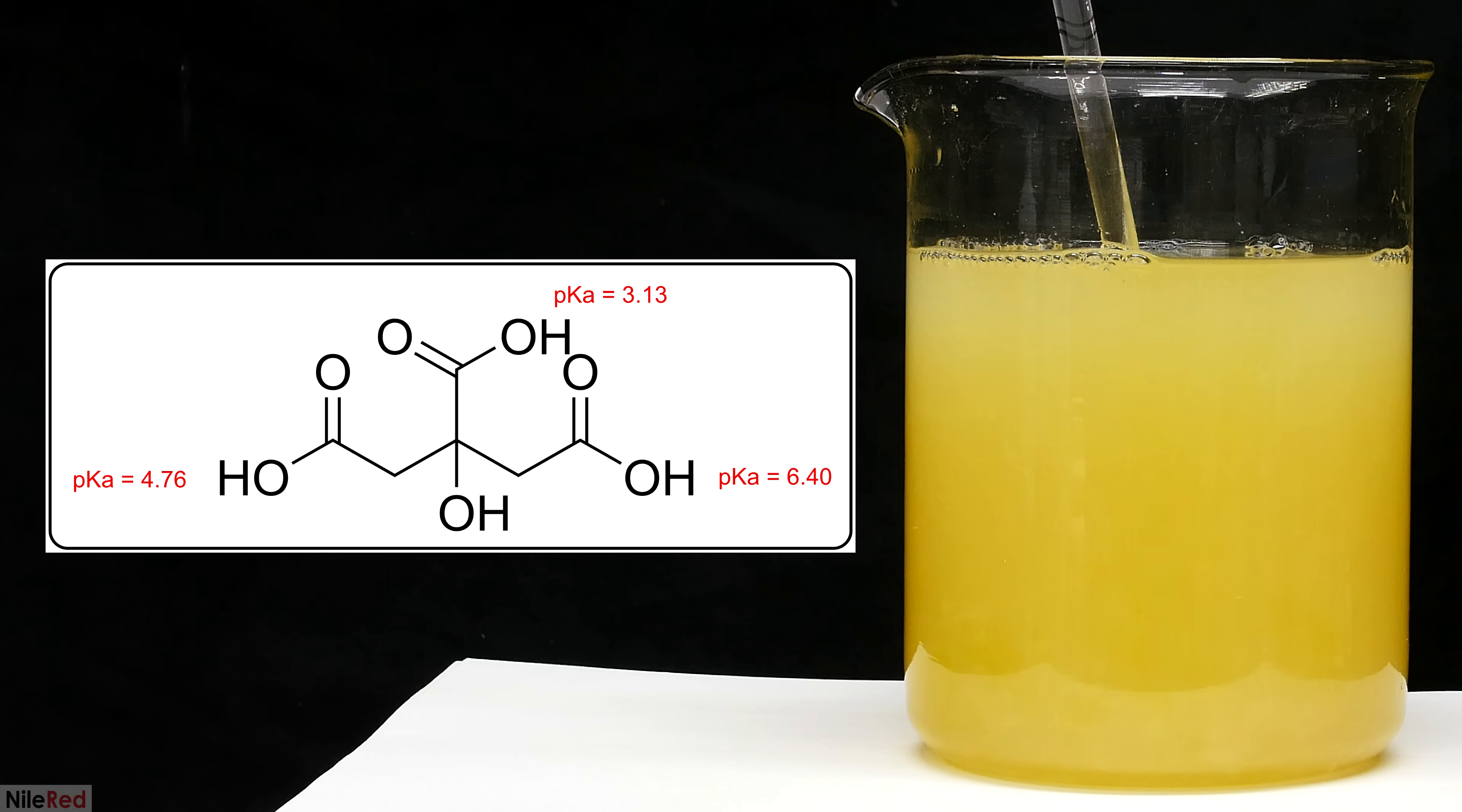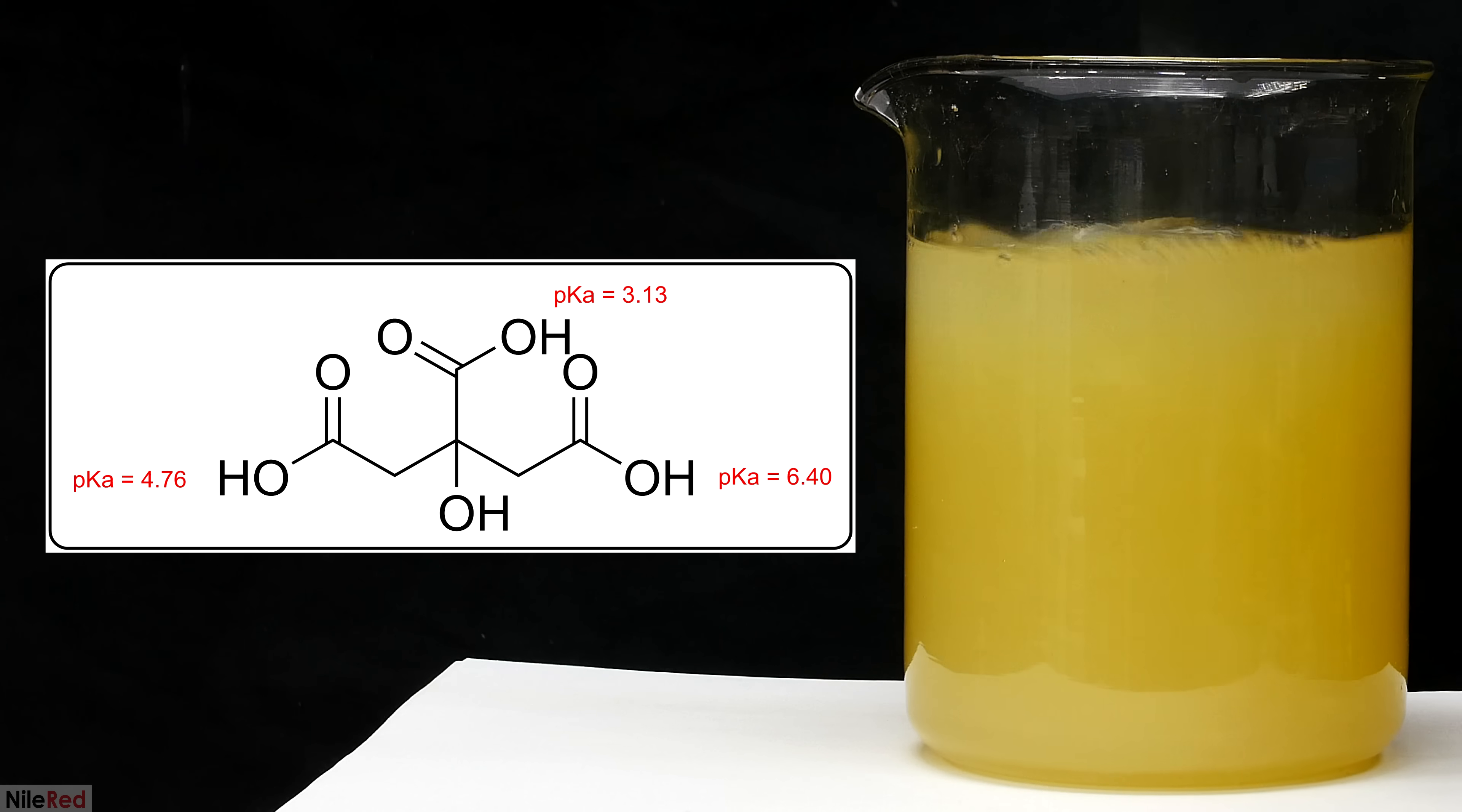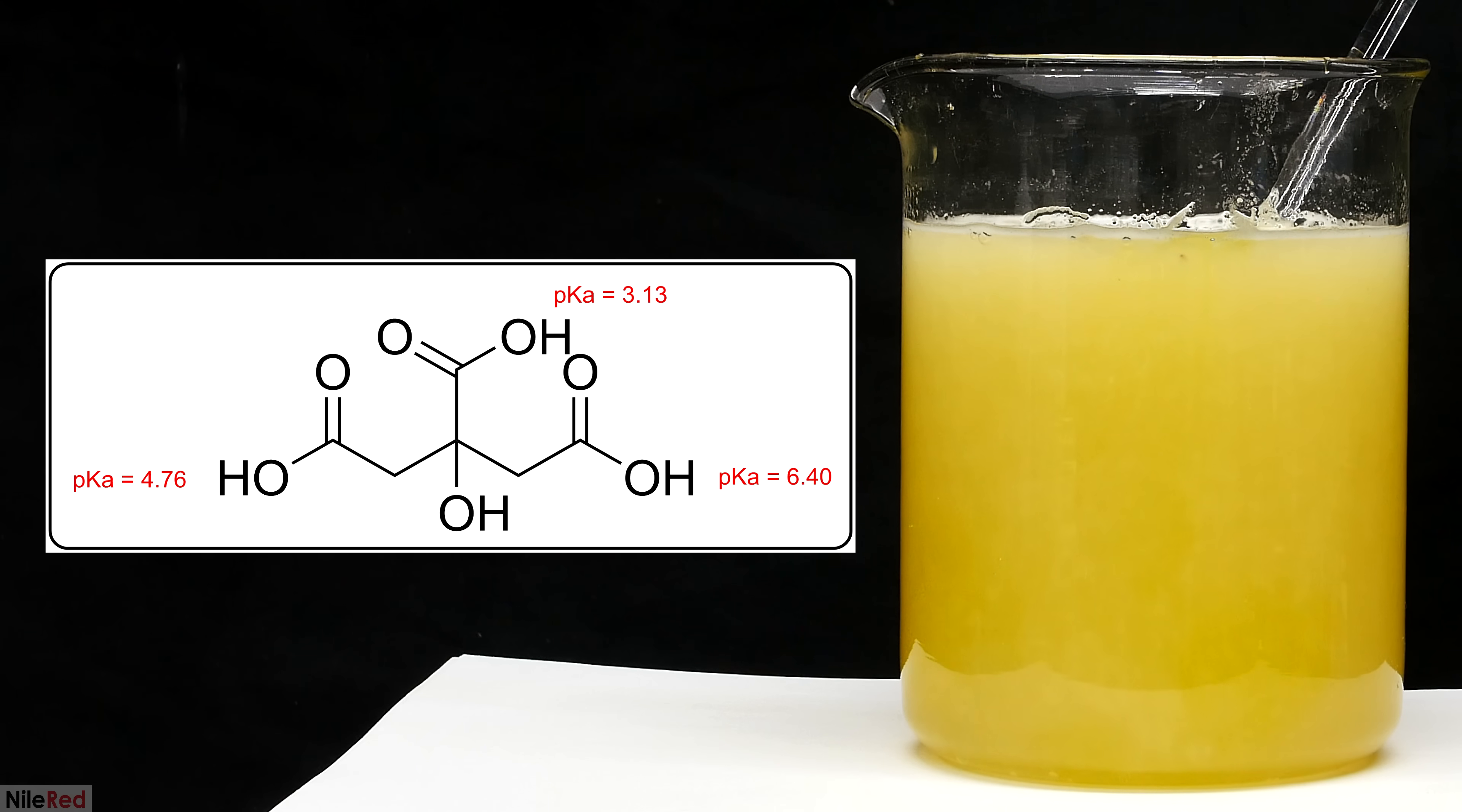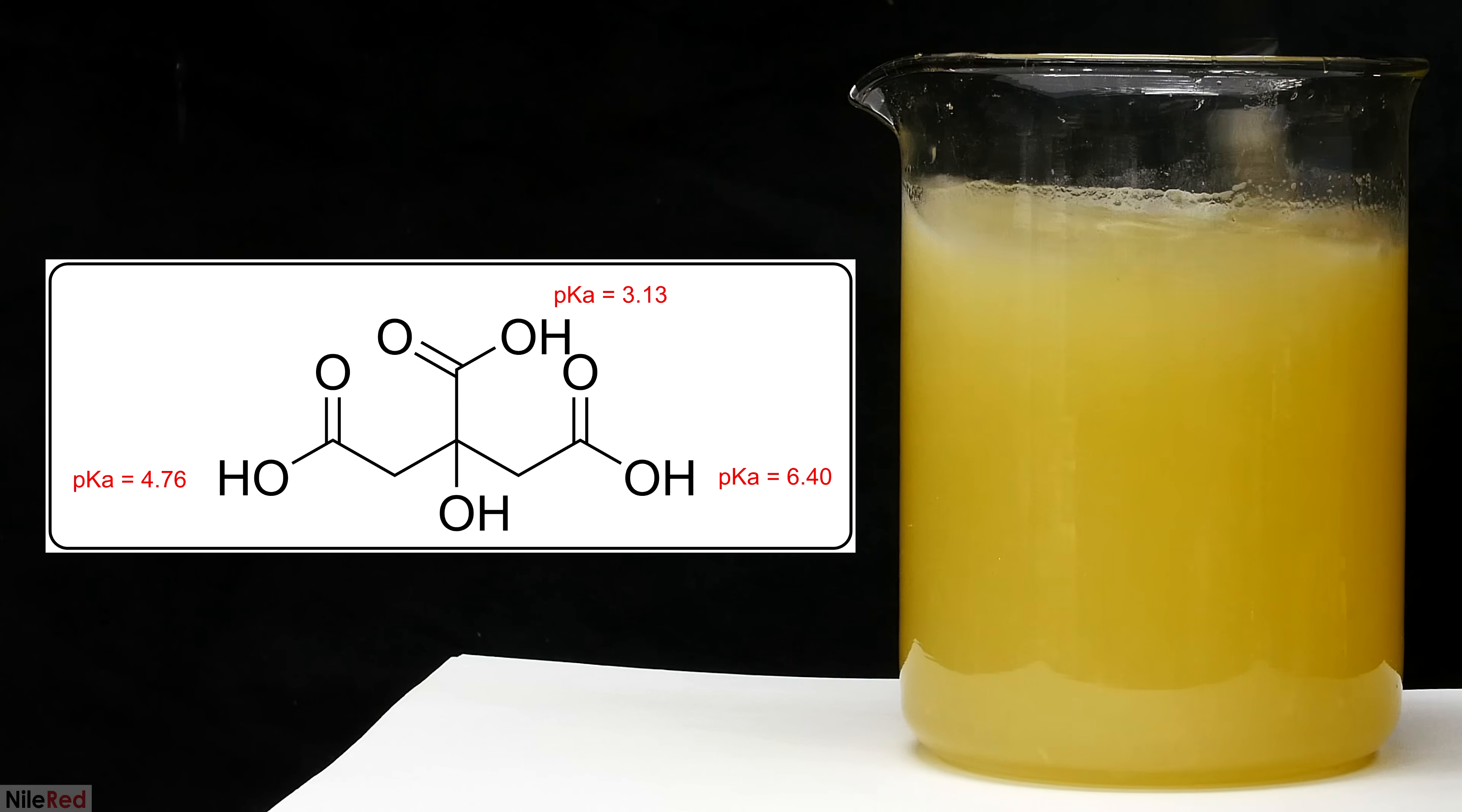The strength of acids is often measured in pKa where the lower pKa denotes a stronger acid. As more sodium hydroxide is added the carboxylic acid groups will be sequentially neutralized going from the strongest to the weakest. To fully neutralize an acidic proton a good rule of thumb is to go to a pH that's two points above the pKa. So the most acidic proton here is the one with a pKa around three and to fully neutralize it we need to bring the solution up to a pH of about five.